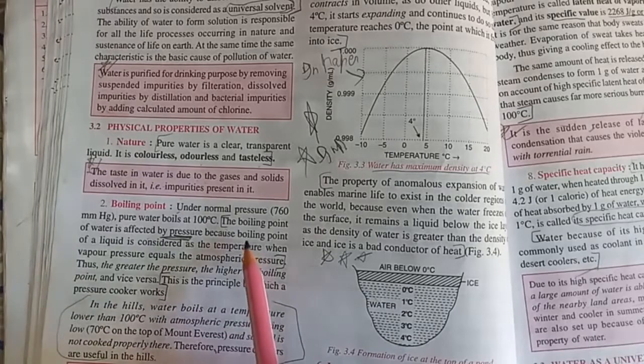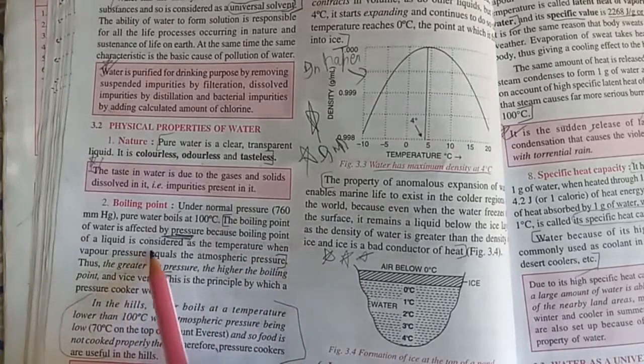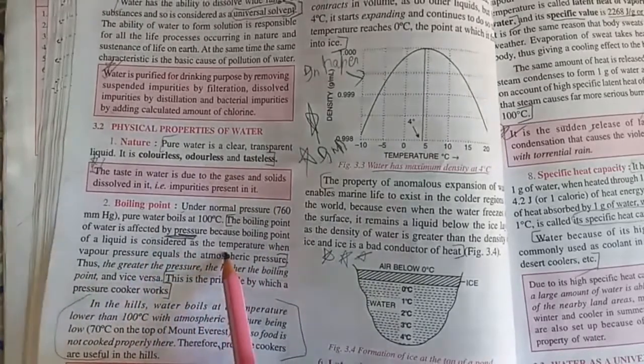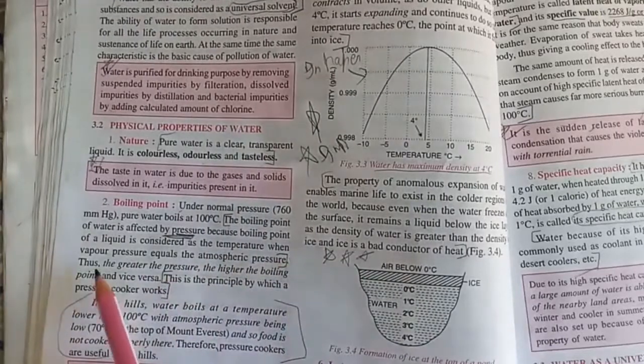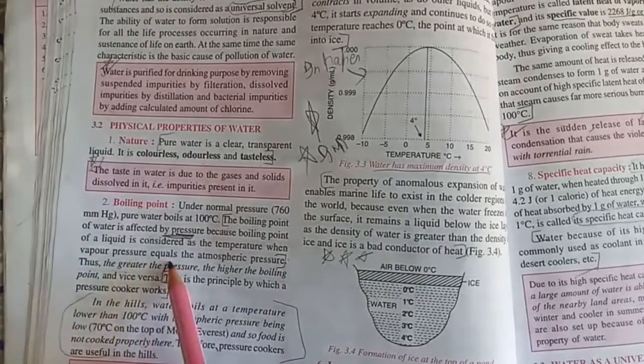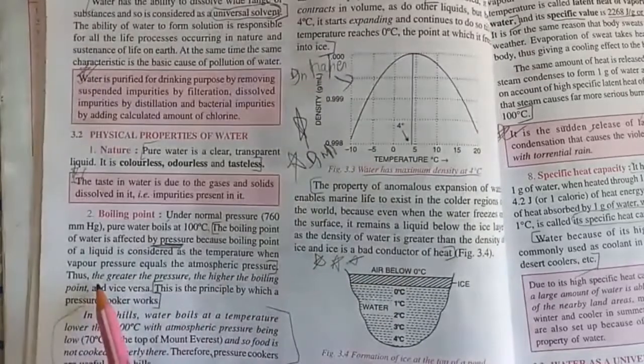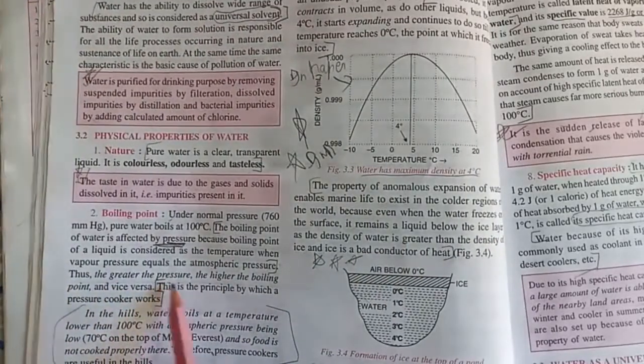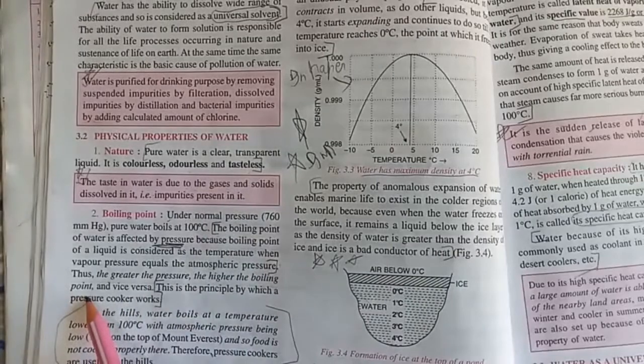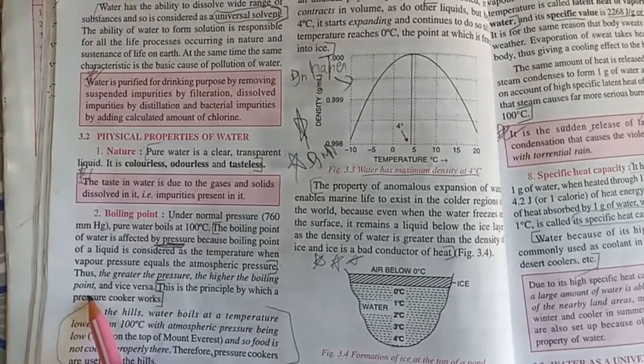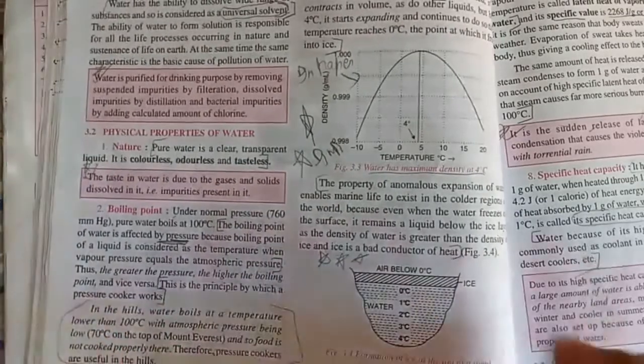The boiling point of a liquid is considered as the temperature when vapor pressure equals the atmospheric pressure. The greater the pressure, higher is the boiling point. Lower the pressure, lower is the boiling point.